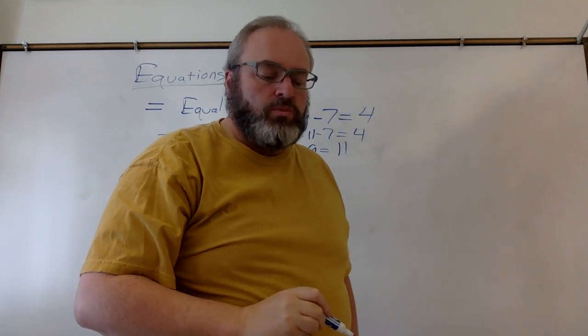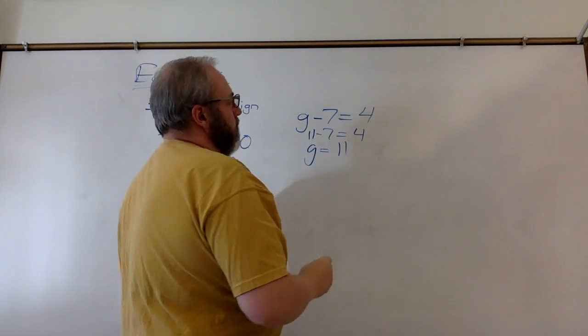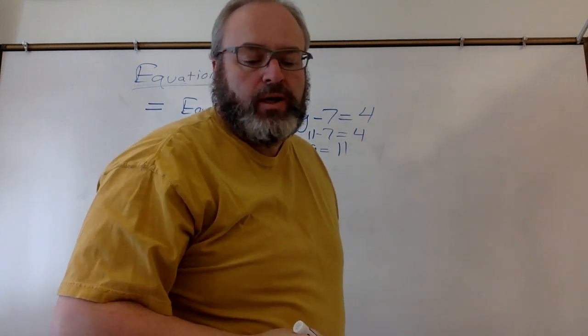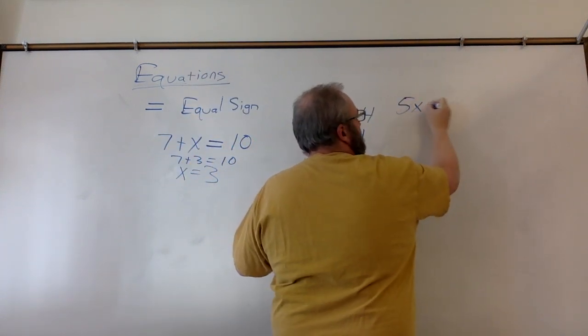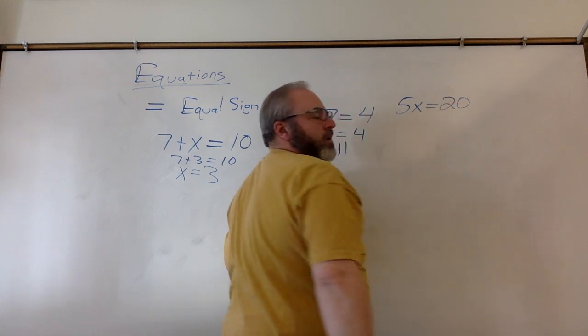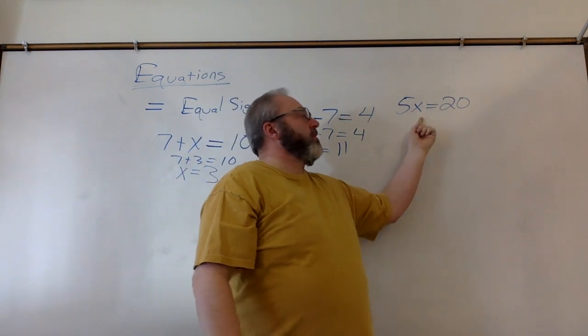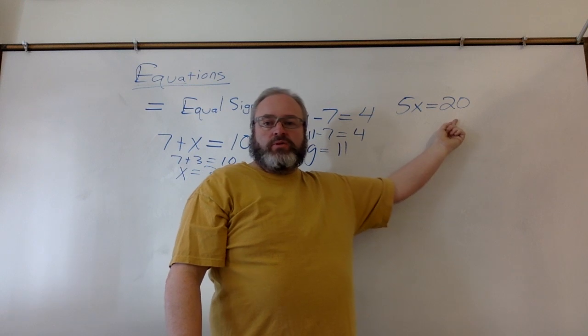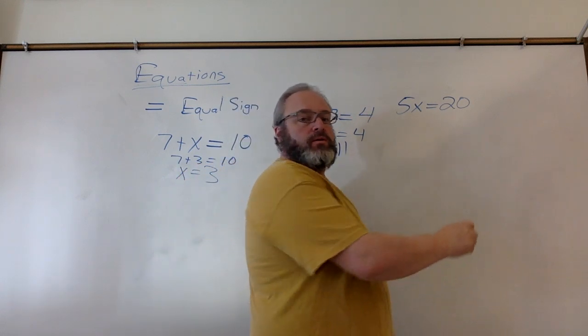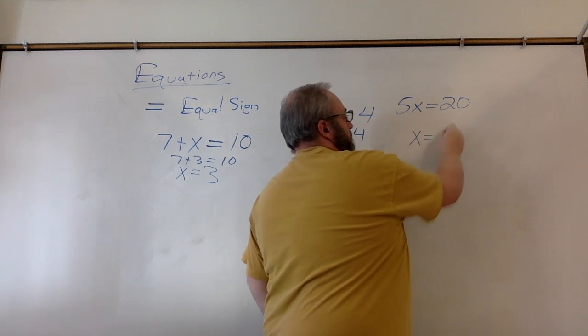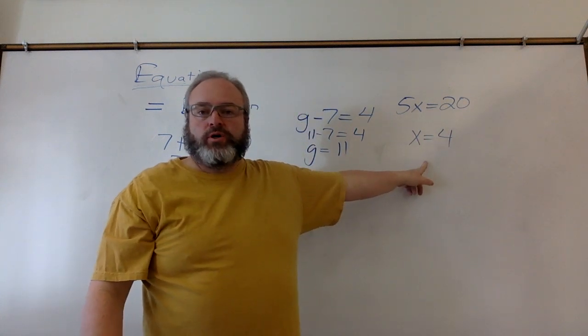We can do this with multiplying and dividing as well. So, for example, if we had 5x equals 20, that means 5 times something equals 20. 5 times what is 20? x would have to be 4.